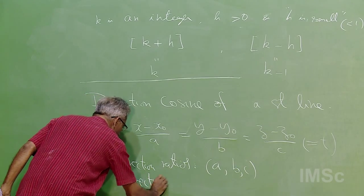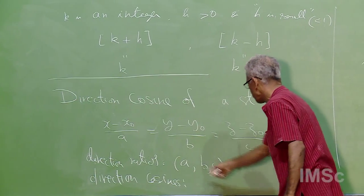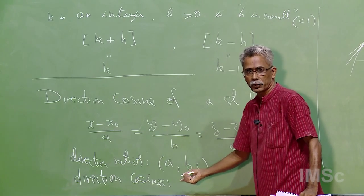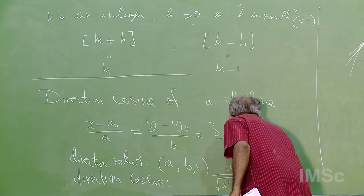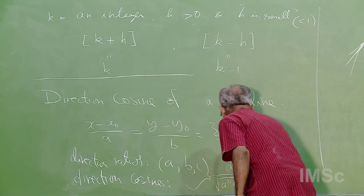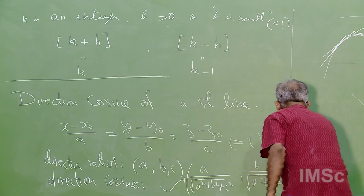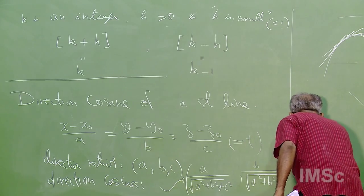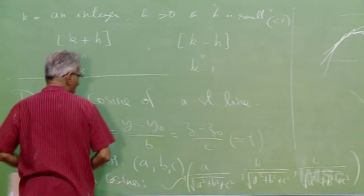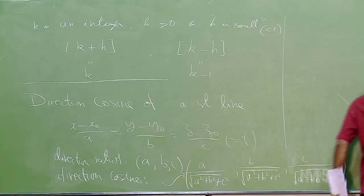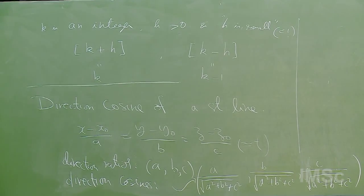For direction cosines, you divide (a, b, c) by the length √(a² + b² + c²), giving (a/√(a²+b²+c²), b/√(a²+b²+c²), c/√(a²+b²+c²)). These are the direction cosines. You all know why they are called that — in three dimensions the straight line points to the direction of the vector (a, b, c).